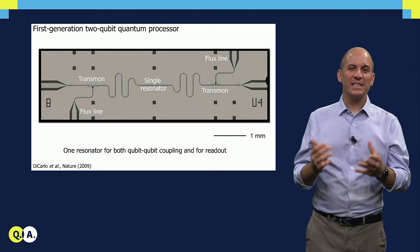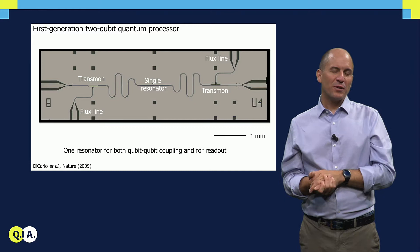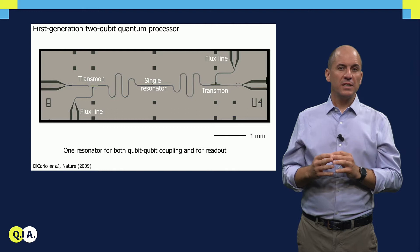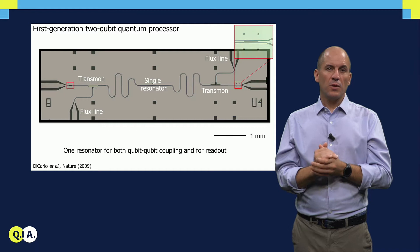So, let's now see examples of how transmons and resonators can be combined to build simple quantum processors. This is the first one I built, back in 2008, together with collaborators at Yale. It has two transmon qubits and only one resonator. This resonator is used for both qubit-qubit coupling and readout functions.